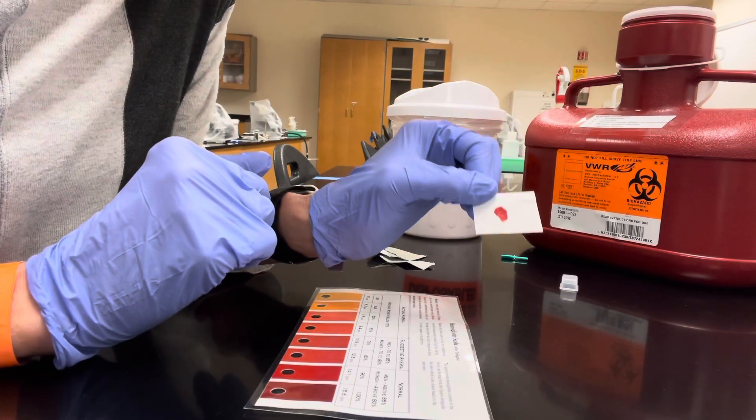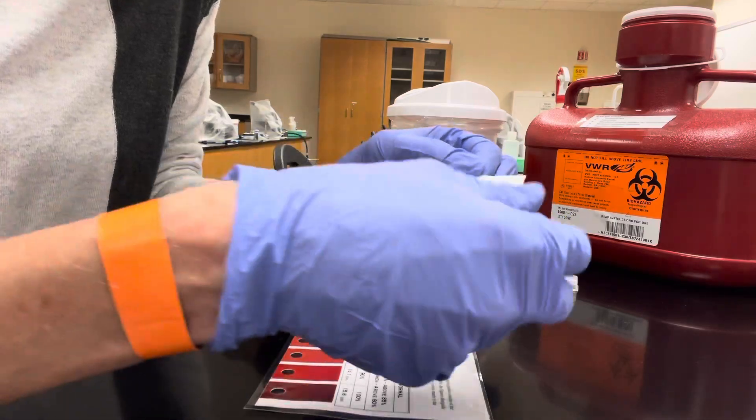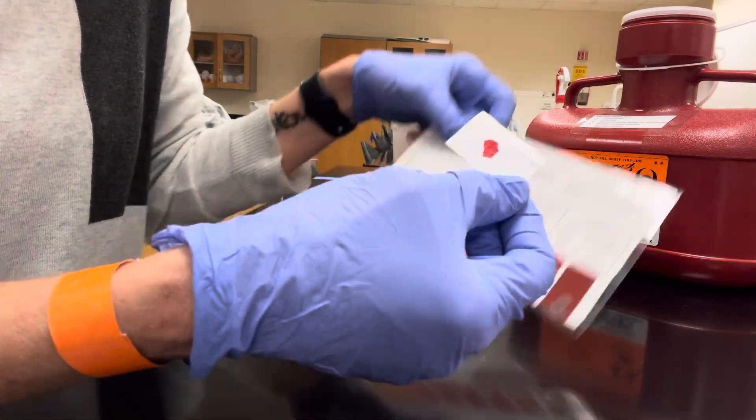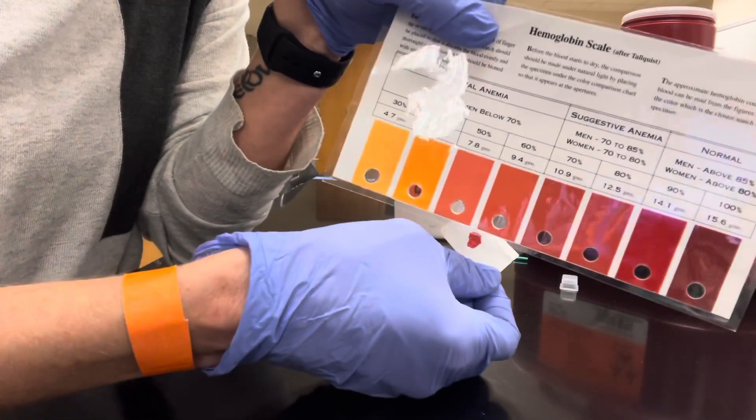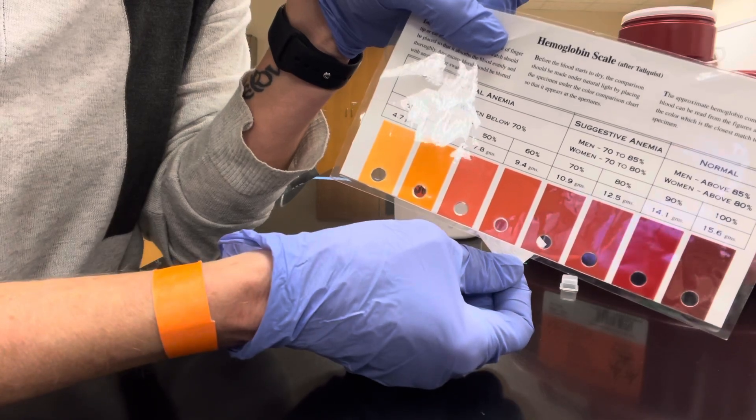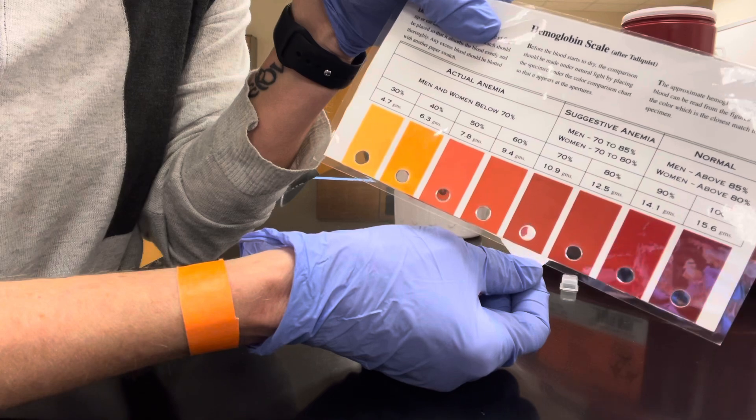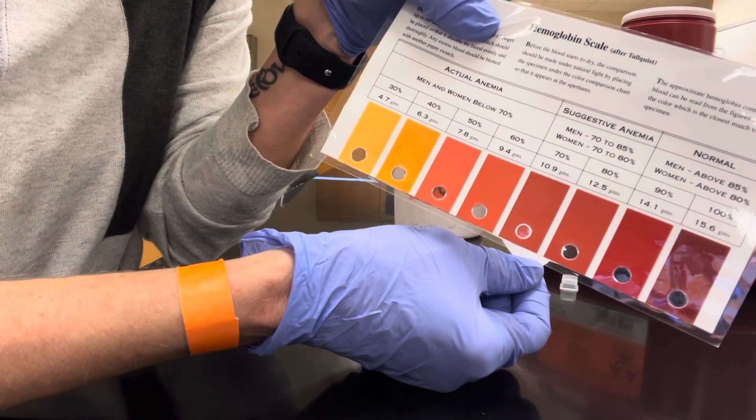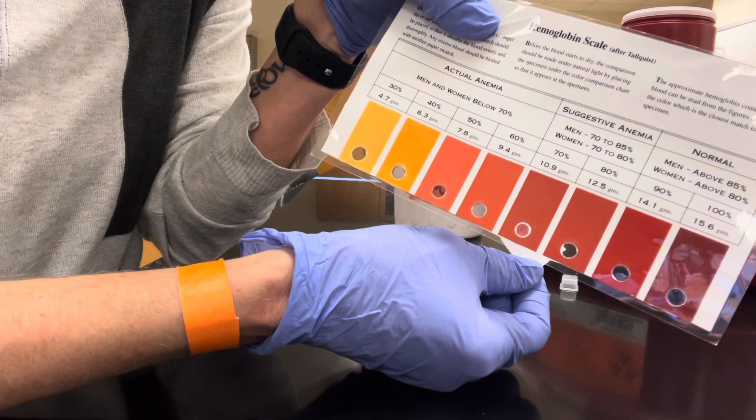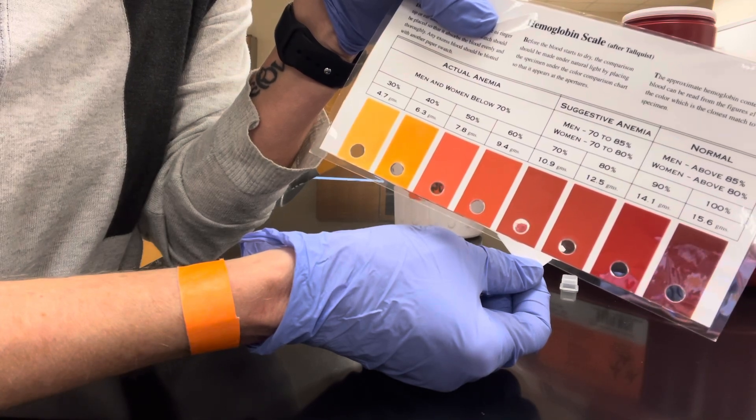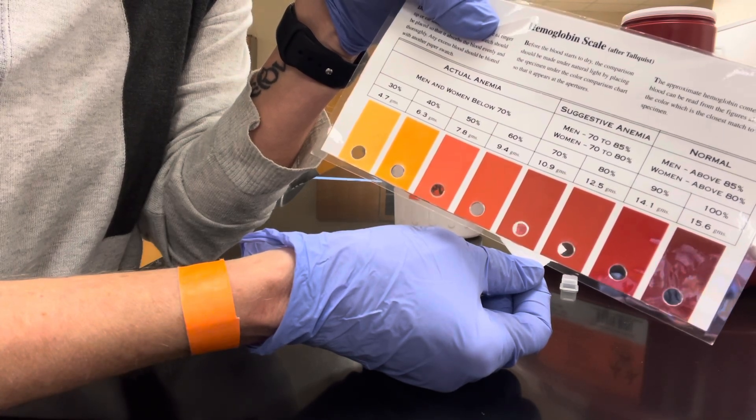As soon as the blood has dried and lost its glossy appearance, you're going to compare it to the hemoglobin scale. You do this by looking at the colors. Hold your Talqvist paper away, but underneath the hemoglobin scale. We don't want to touch blood to it. Match the color and record the corresponding concentration of hemoglobin.